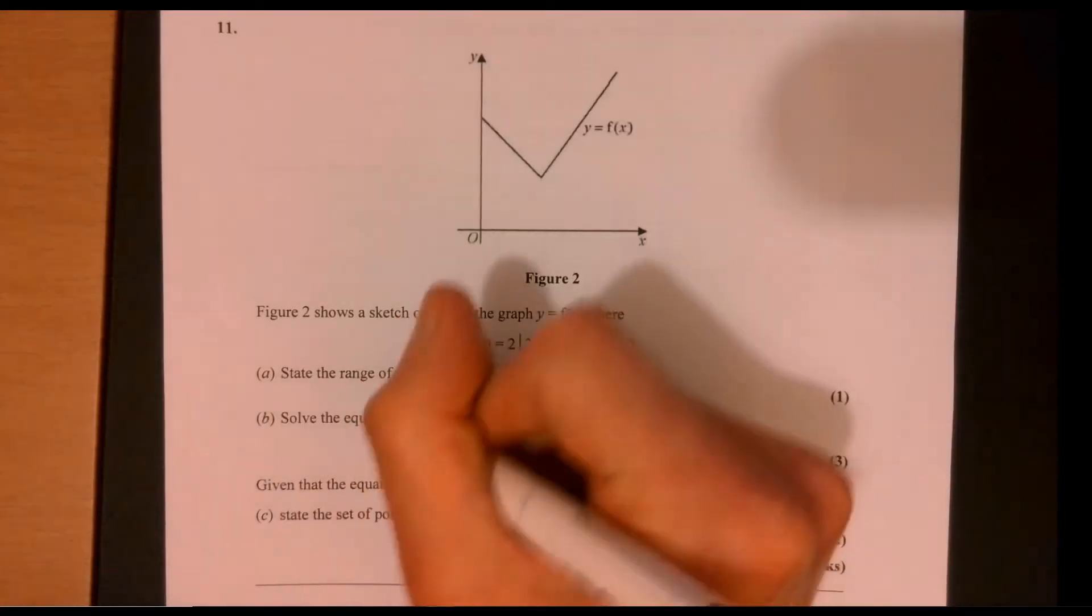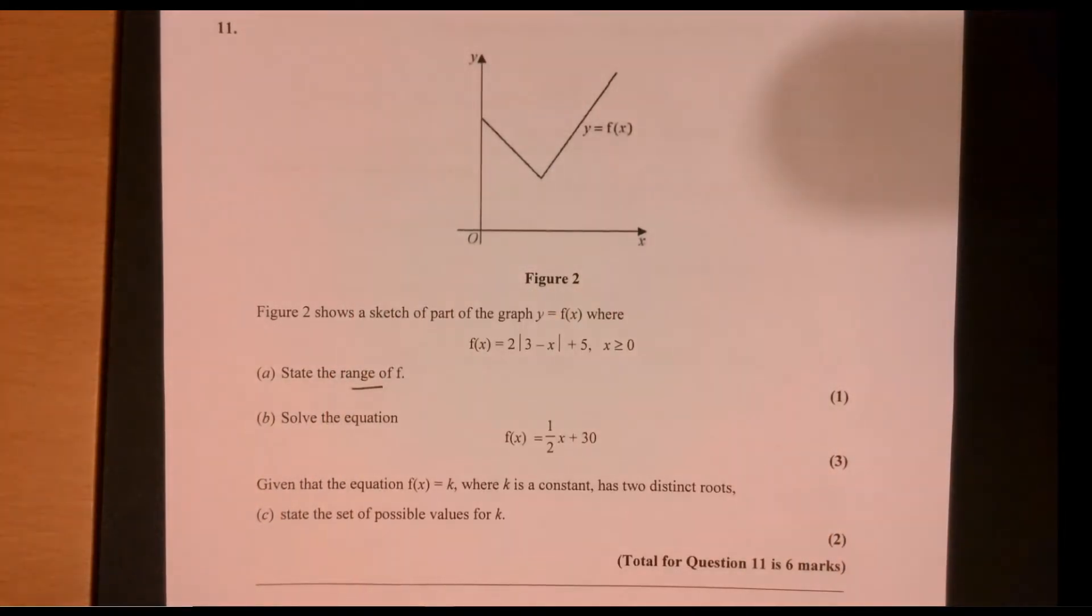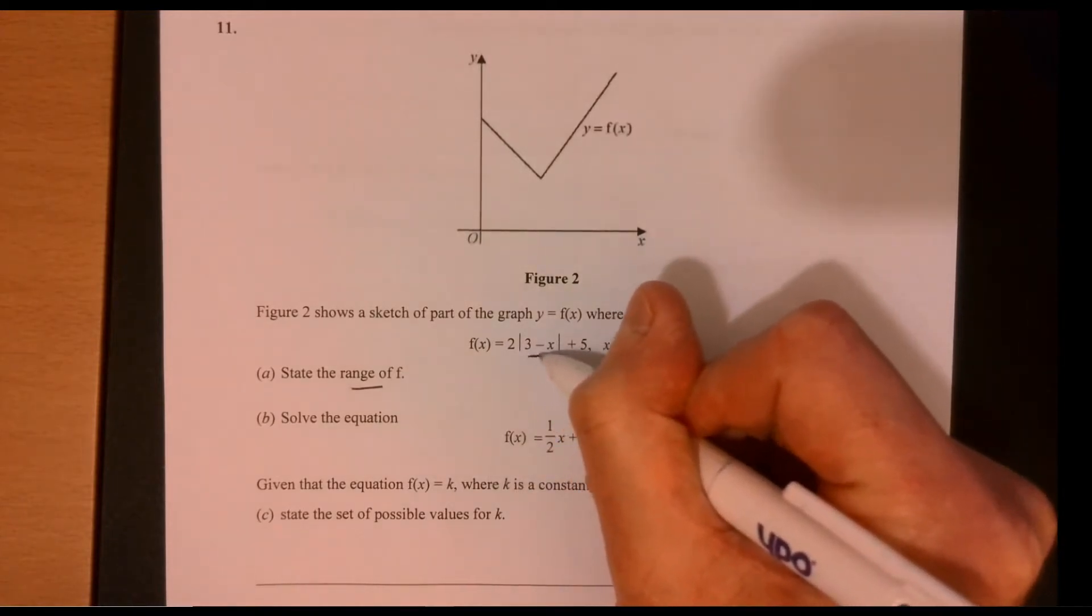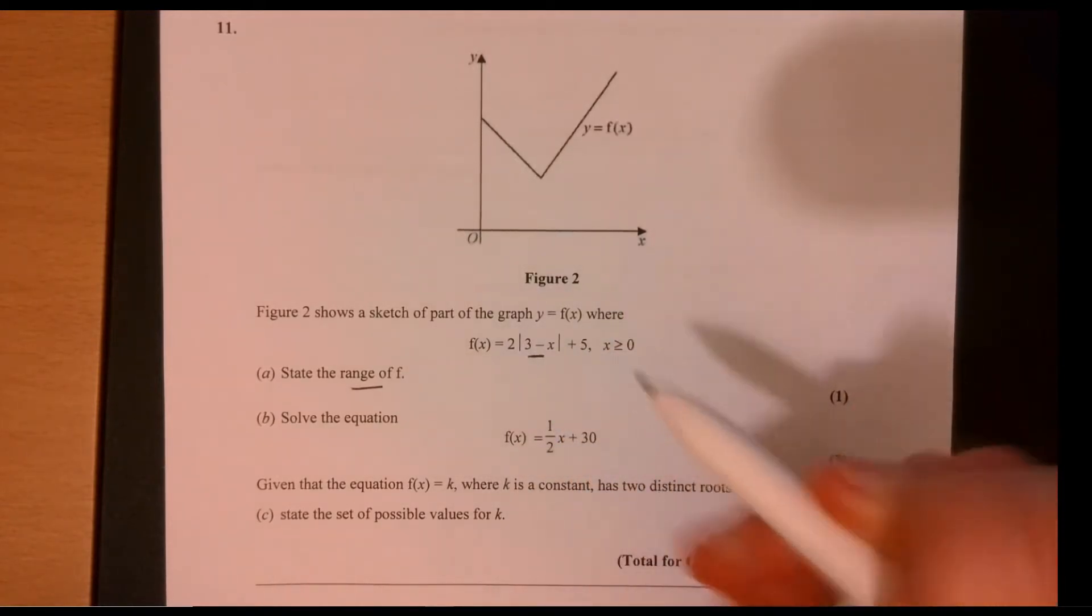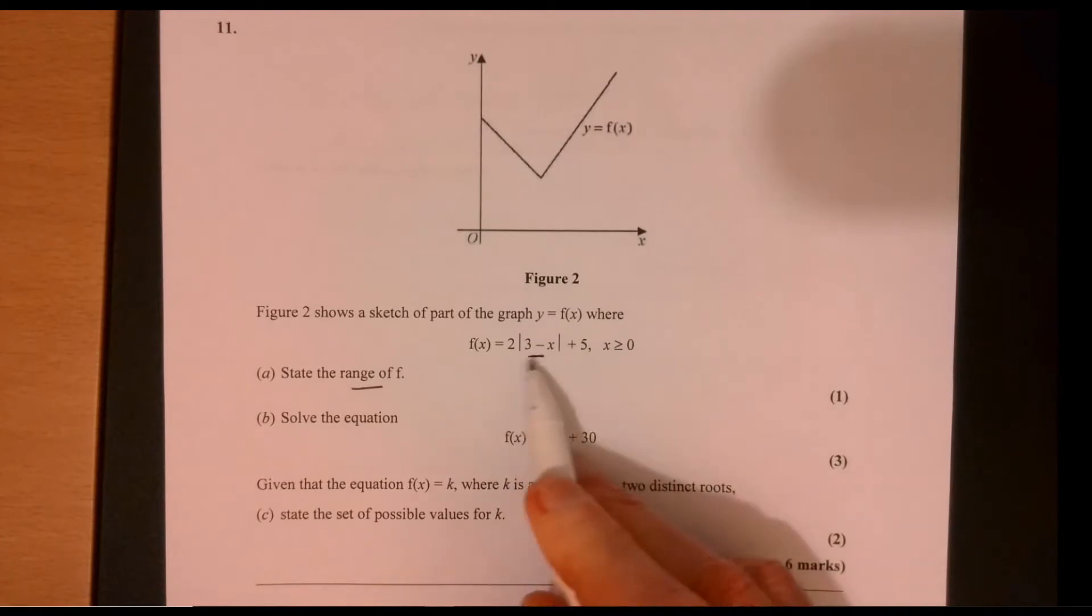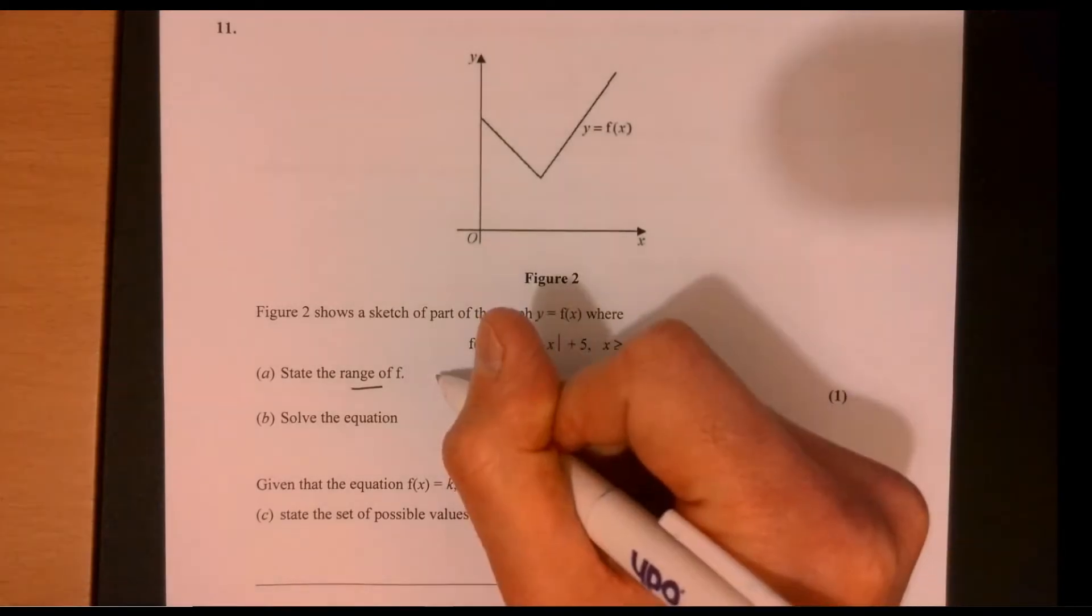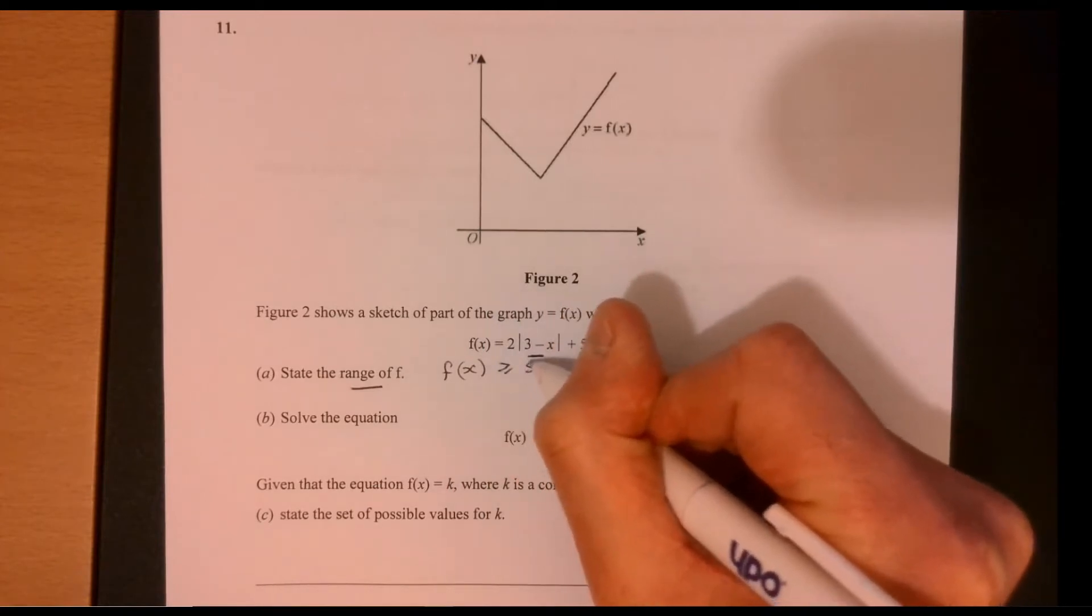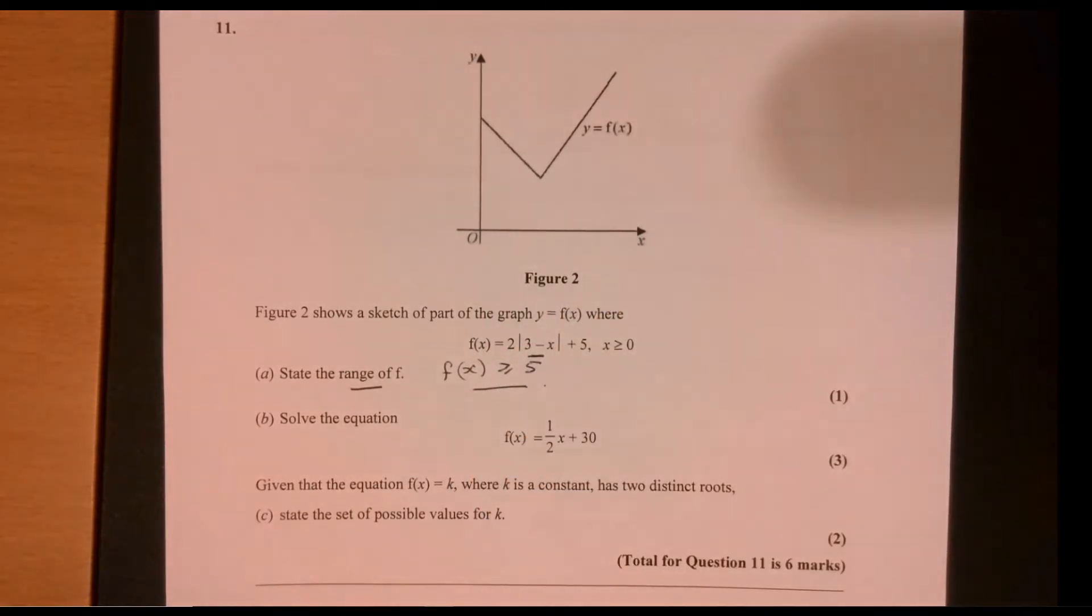Question 11. So the range of our function. Well, if this is 0, then it's going to be 5. Now, it's always got to be more than that, hasn't it? So therefore, we can say that our function must always be more than or equal to 5. That's what we mean by the range.